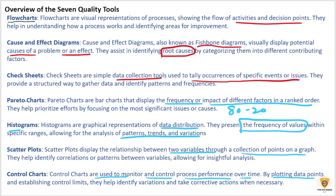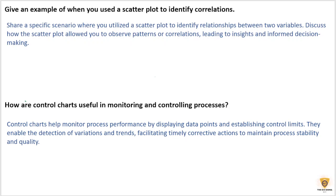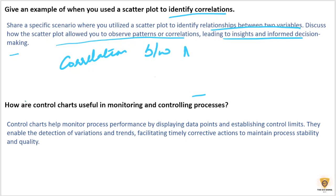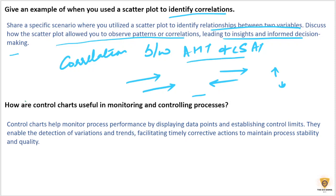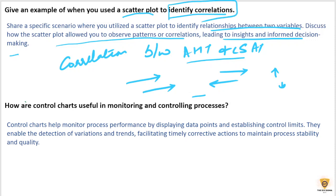Let's start with the interview questions. We'll also have a case study today. The first question: give an example of when you used scatter plots to identify correlations. You need to share a specific scenario where you utilized a scatter plot to identify relationships between two variables and discuss how it allowed you to observe patterns or correlations leading to insights and informed decision making. An example is the correlation between AHT and CSAT — if AHT is increasing, is CSAT increasing or decreasing, or is there no correlation? You can plot a scatter graph to identify the correlation between them.